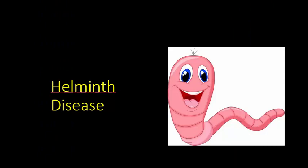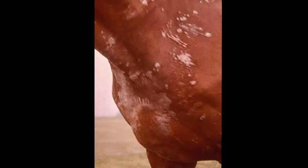Besnoitia affects a range of animals and causes severe damage to the skin on its way to a multi-systemic infection. Let's move on to some of the helminths or nematodes that cause damage to the skin. We're going to start with a nematode that affects the skin of horses — this is Onchocerca cervicalis, also known as the equine neck threadworm.